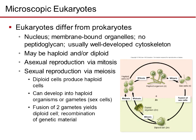Eukaryotes, as a reminder compared to prokaryotes, have a nucleus — prokaryotes have no nucleus, only a nucleoid. Eukaryotes have membrane-bound organelles such as mitochondria. There is no peptidoglycan in eukaryotic cell walls, and they usually have a well-developed cytoskeleton.